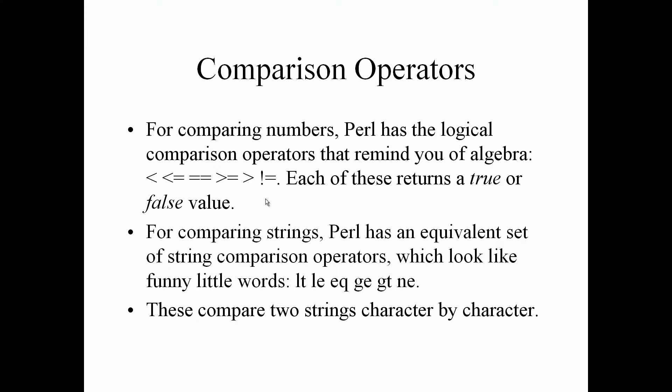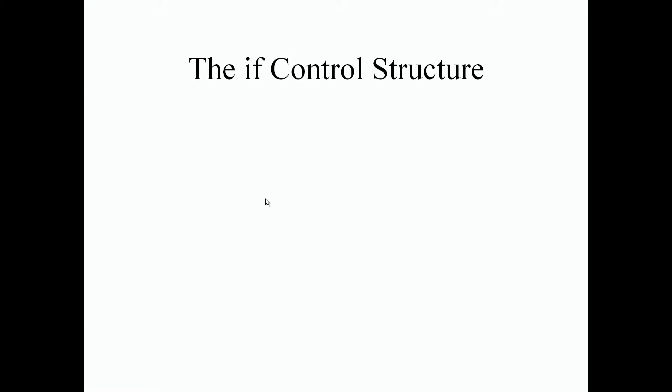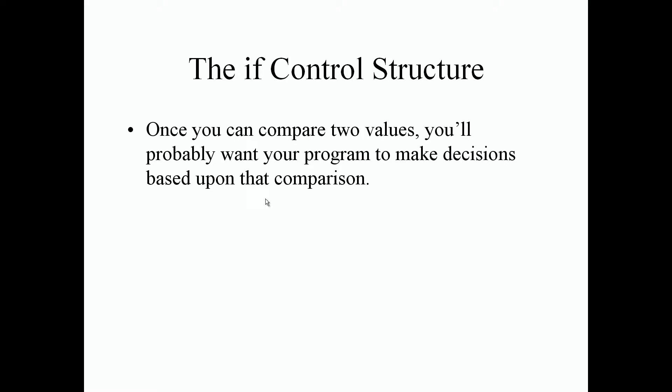These operators compare two strings character by character. Now let's talk about the if control structure. Once you can compare two values, you'll probably want your program to make decisions based on that comparison — for example, if four is less than six, carry out a task.